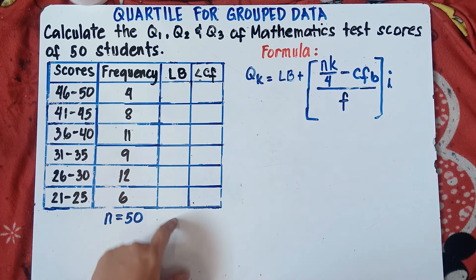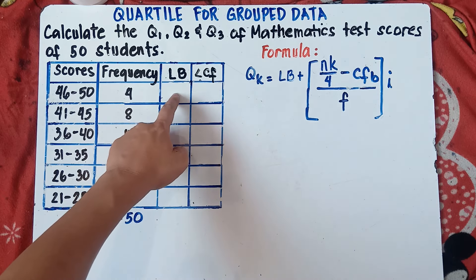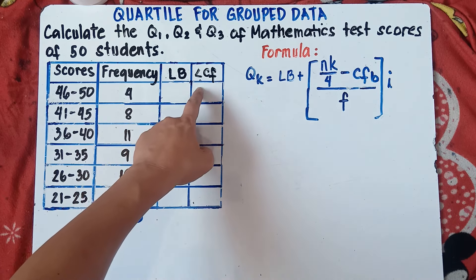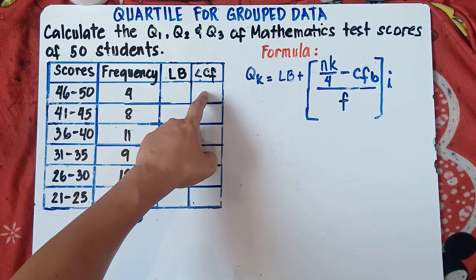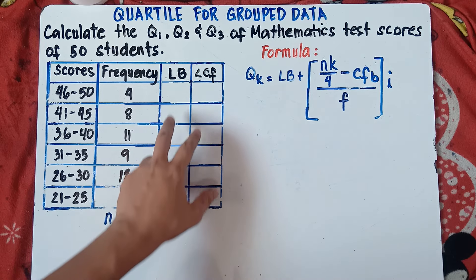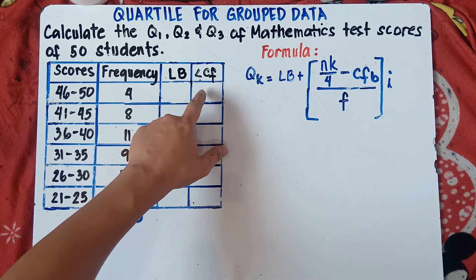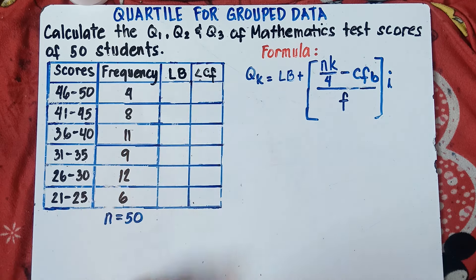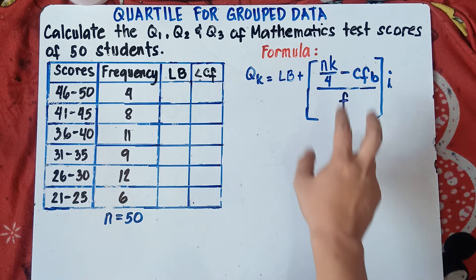In this column we have LB, which stands for lower boundary. This one — less than CF — stands for less than cumulative frequency. We need to find the value of LB and less than CF because we will be using these in our formula.